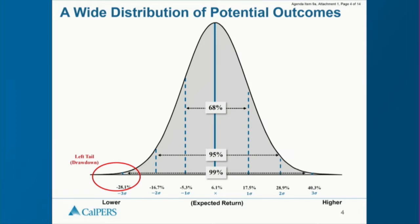The second point is that we are more concerned with the left side of that distribution — the probability of a large drawdown. And the third point is that conventional risk management practices tend to underestimate the probability as well as the severity of a market drawdown. That leads into the second part of this discussion: market drawdowns.